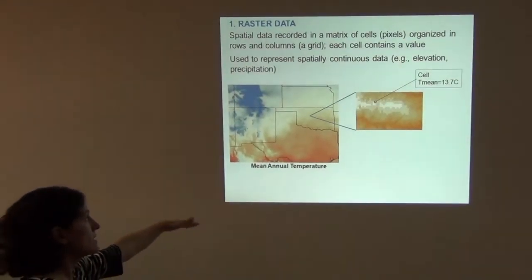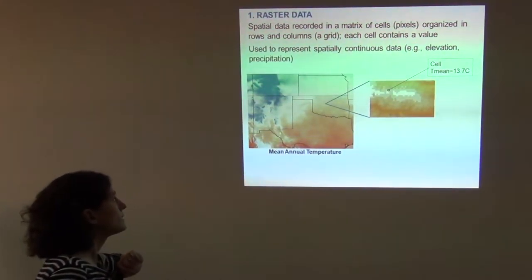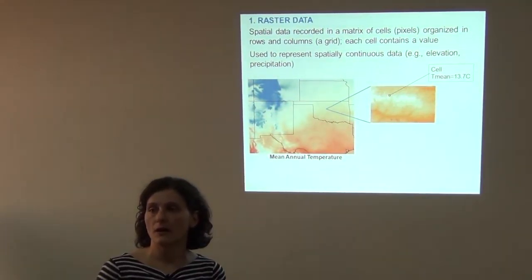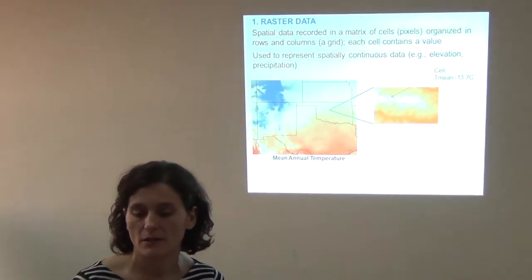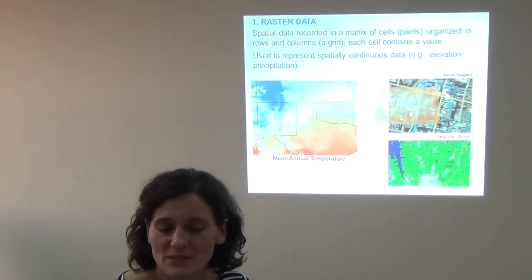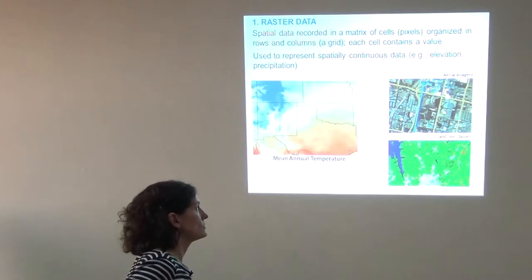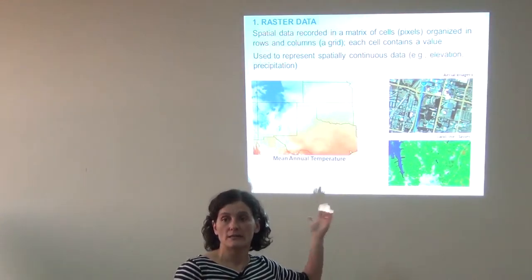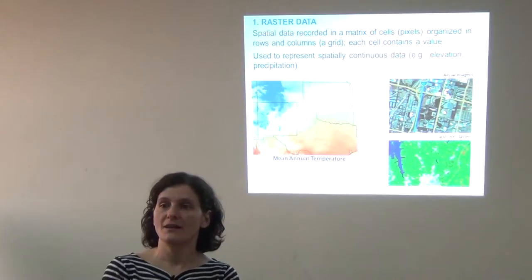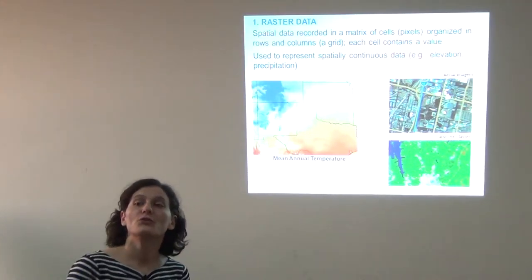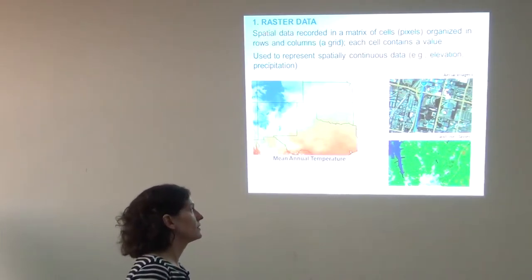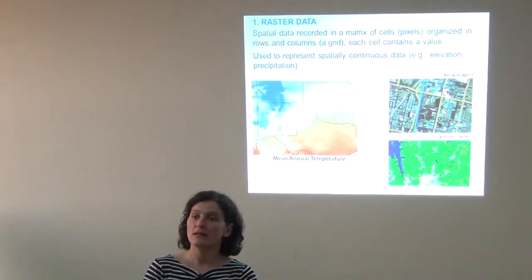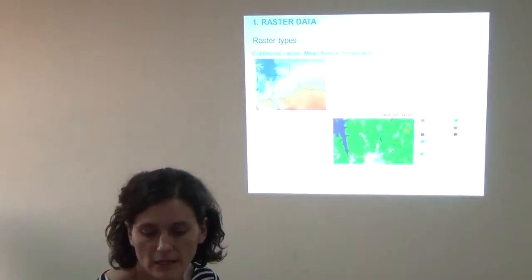We have a matrix of cells organized in rows and columns, and each cell contains a value. Raster data is used for climate data including precipitation and elevation. When we look at an aerial image on Google, that is also a raster — cells with a certain color representing a feature in the real world. Land use classes are another type of raster where cells are populated with values for each land cover class.